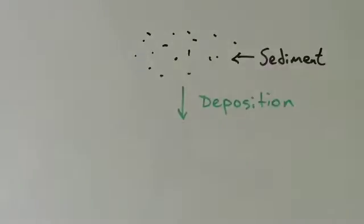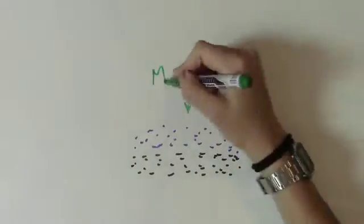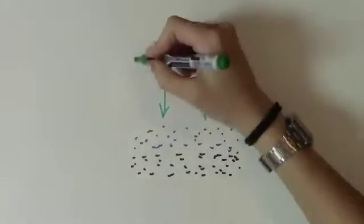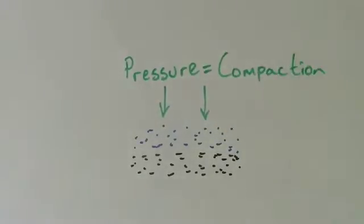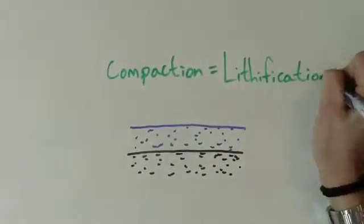Sedimentary rocks form when sediment, or tiny little pieces of rock, is deposited or laid down in a particular place. And then, as more and more sediment gets deposited on top of it, it gets compacted and squished together until it's finally squished enough that we can call it a rock.